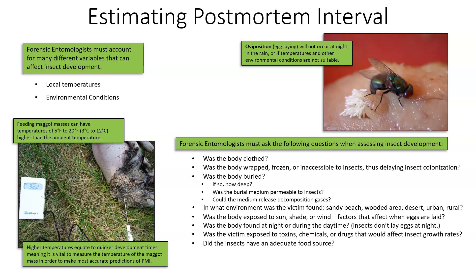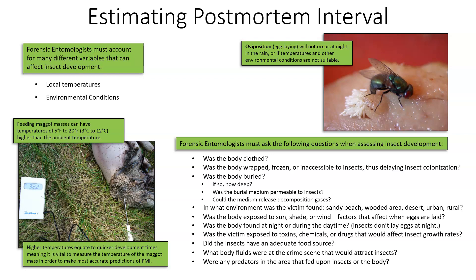Did the insects have an adequate food source? Were they actually able to colonize the body? Was it a small or large food source? What body fluids were at the crime scene to attract insects? Blood and decomp gases are going to attract bottle flies, but feces, urine, and other bodily fluids are going to attract more house flies. Were any predators in the area that feed upon insects? Certain beetles feed on fly eggs or larvae, and if a large beetle population is consuming all the larvae as fast as the flies are depositing them, there will be less larvae for the forensic entomologist to analyze in establishing a PMI.